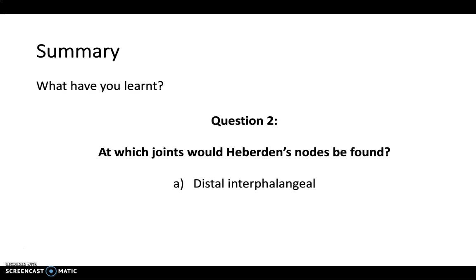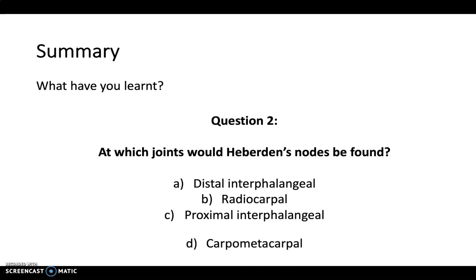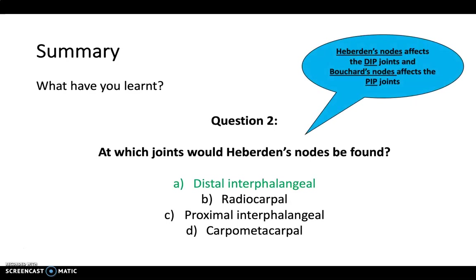Next question: at which joints would Heberden's nodes be found — the distal interphalangeal joints, the radiocarpal joints, the proximal interphalangeal joints, or the carpometacarpal joints? The answer is A: Heberden's nodes affects the distal interphalangeal joints in the hands, while Bouchard's nodes affects the proximal interphalangeal joints.